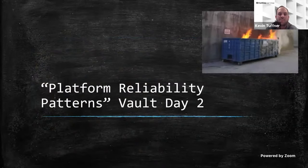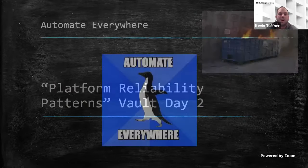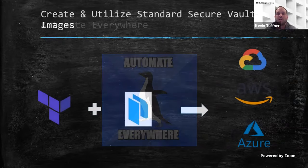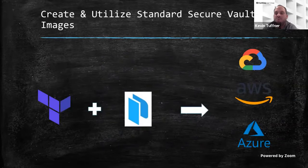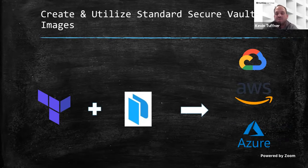Let's talk about platform reliability first and how not to create that dumpster fire effect in your Vault enterprise. One of the big patterns I like to utilize and preach is: automate everywhere, wherever possible when deploying things like Vault and Consul. This enables you to streamline platform deployment, future upgrades, and even codifying policies, secrets engines — essentially automate from start to finish.